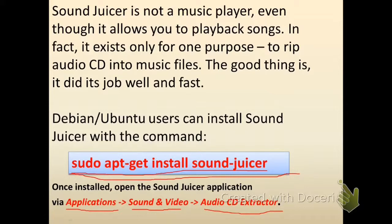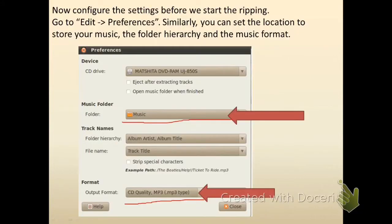Once the application is installed you have to open SoundJuicer. To do this, go to Applications > Sound and Video, then select Audio CD Extractor. After you have launched the program, we need to configure the settings before starting the ripping process.